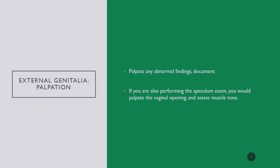If there are abnormal findings, you would want to palpate them and document the size, the shape, and the location, just as you would any other lesion. If you're performing a speculum exam, you would also palpate the vaginal opening and assess muscle tone prior to insertion of the speculum.